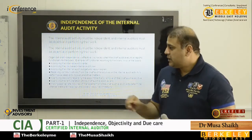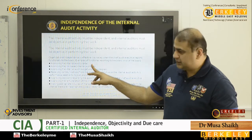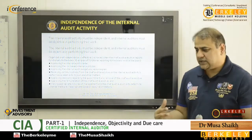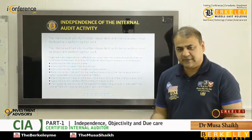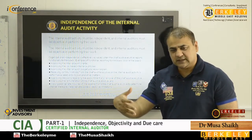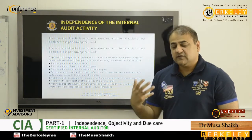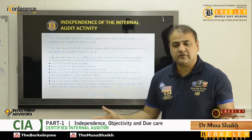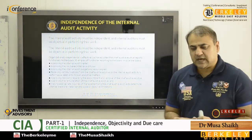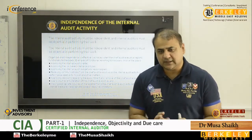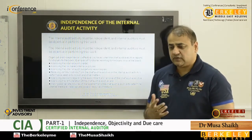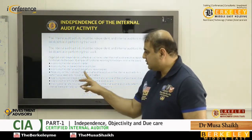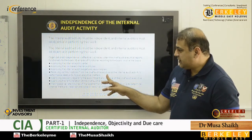Examples of functional reporting to the board — meaning the audit committee — include: when we need approval of the internal audit charter, when we need approval of risk-based internal audit plans. Just as a CEO will show a budget to the board before the year starts, the head of internal audit will show his or her plan to the audit committee and get approval well in advance, covering all areas, especially in large multi-location organizations.